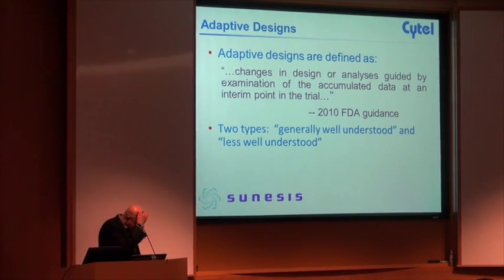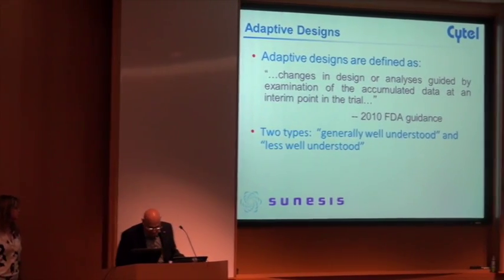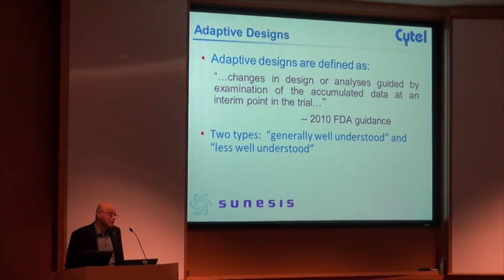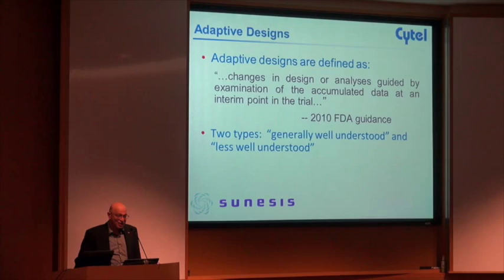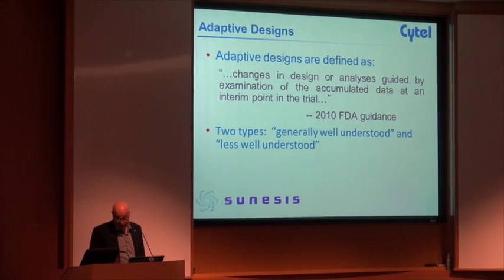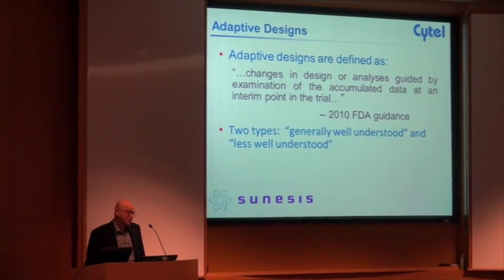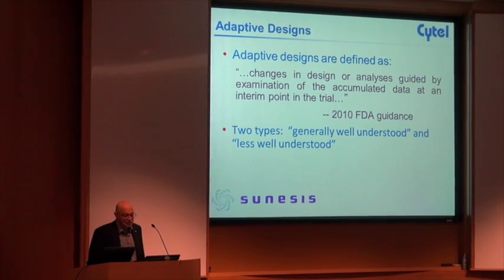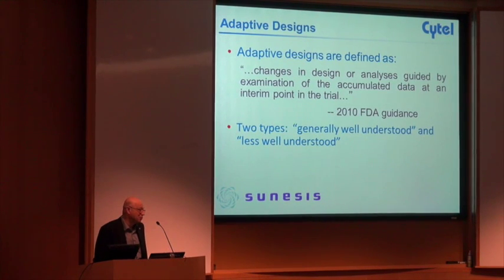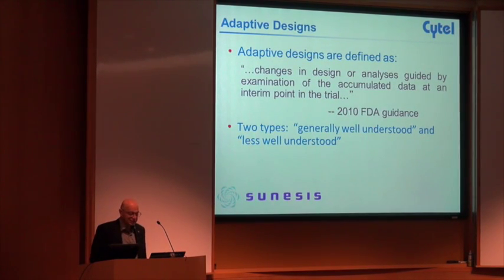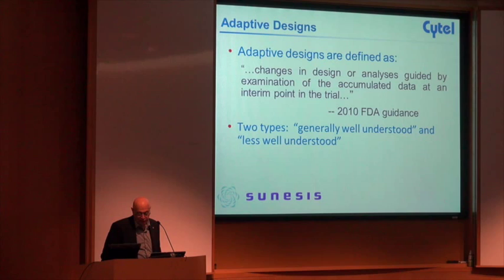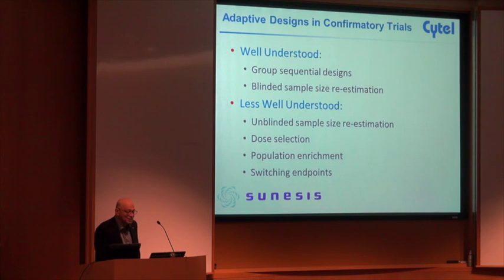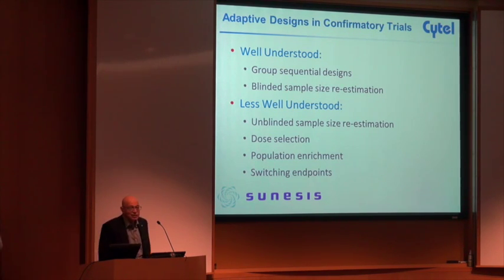It's an adaptive design. Adaptive designs are designs in which you can look at the data and make a change to the trial in an unblinded manner. But you have to protect the integrity of the trial — you have to protect the type 1 error, protect from operational biases. There's an FDA guidance now which breaks them up into well-understood and less well-understood designs. This one is in the less well-understood category. Well-understood is group sequential.